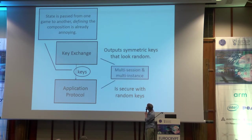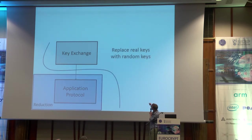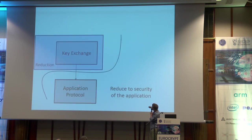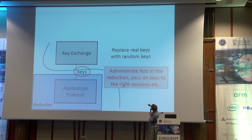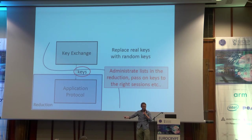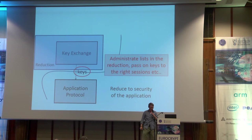This is a multi-session and multi-instance game. In more detail, how do we prove things? We prove things by saying: replace the real keys with random keys, and then reduce the security of the application protocol when using random keys. In each of these steps, you have to maintain lists in the reduction, pass keys to the right sessions, etc. It's boring, it's very complicated, and you have to do it in every reduction step.